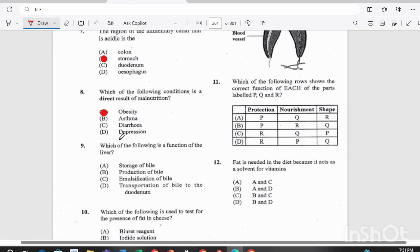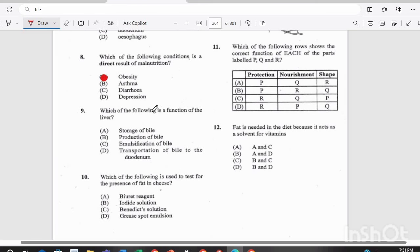Question nine. Which of the following is a function of the liver? Is it A. Storage of bile, B. Production of bile, C. Emulsification of bile, or D. Transportation of bile to the duodenum? If you answered B. Production of bile, you are correct. Remember the liver produces bile, but the bile duct would store and actually excrete the bile.